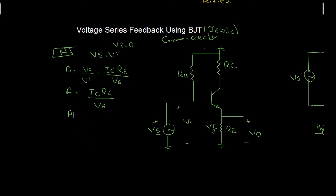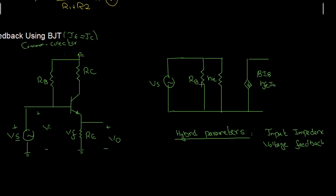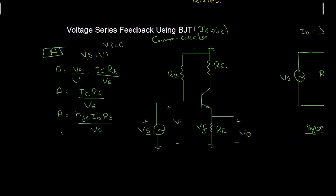IC equals HFE times IB, so I replace IC with HFE·IB into Re, divided by Vs. From the equivalent circuit, IB equals Vs divided by the input resistance HIE. I will substitute IB = Vs/HIE into the gain equation.